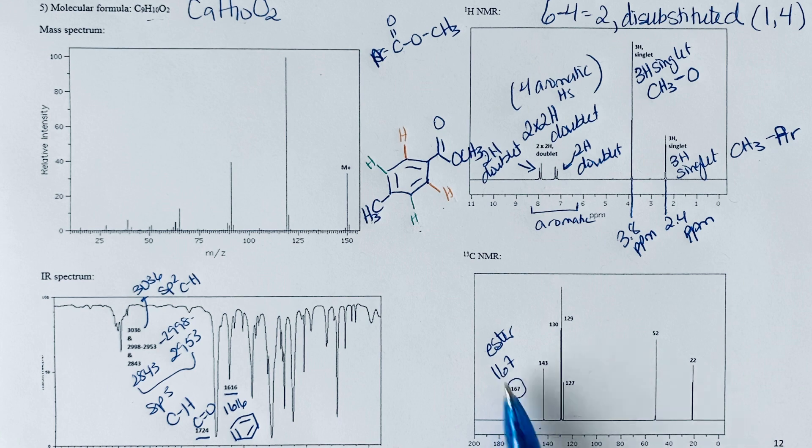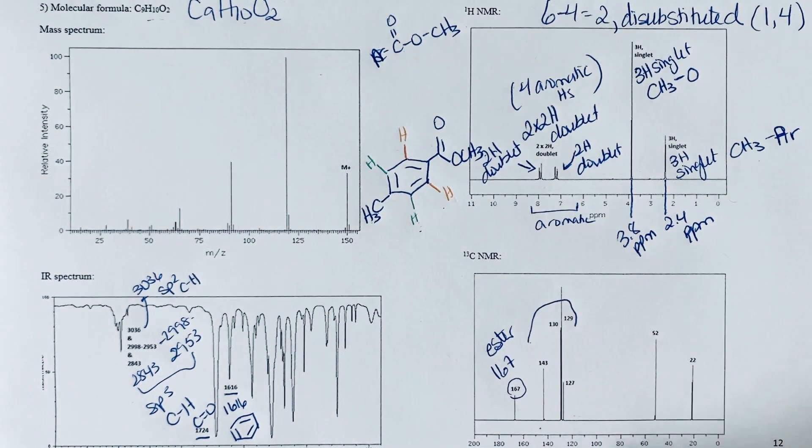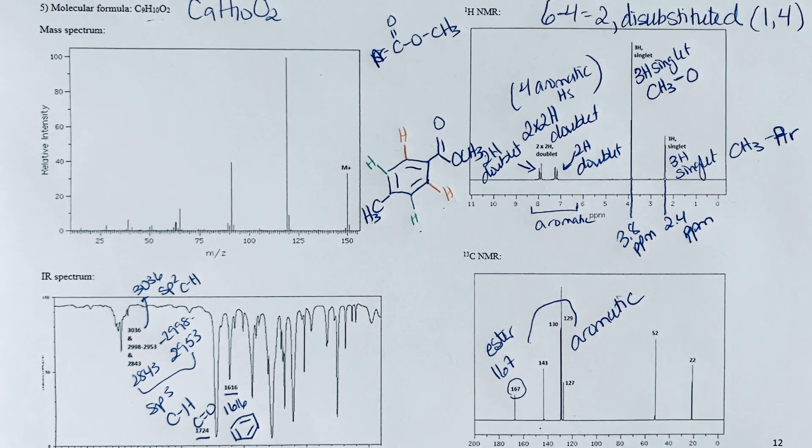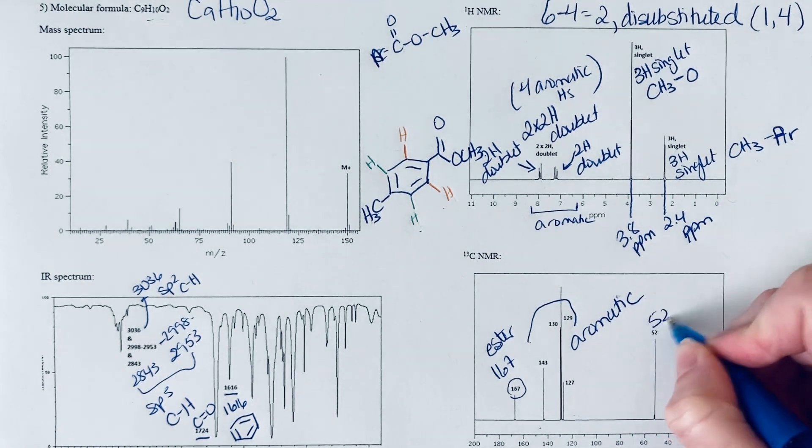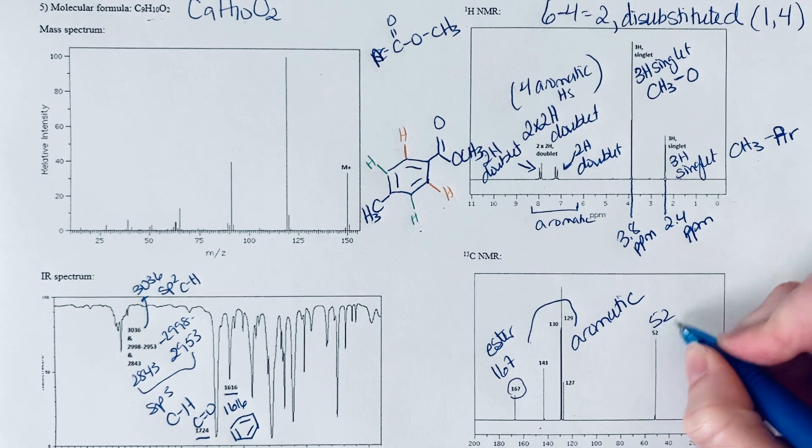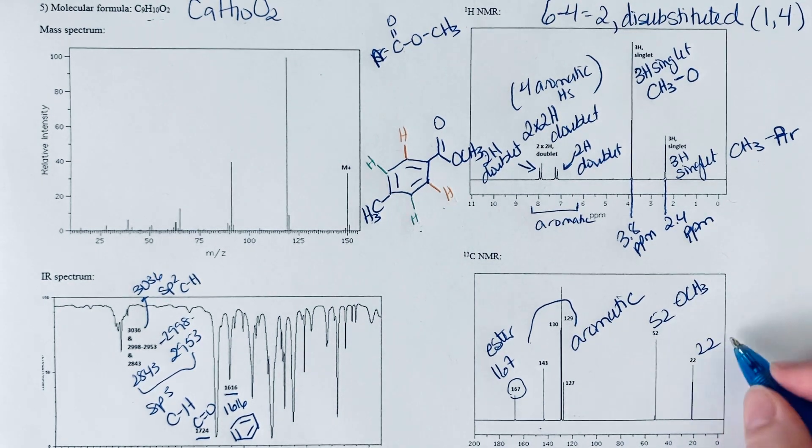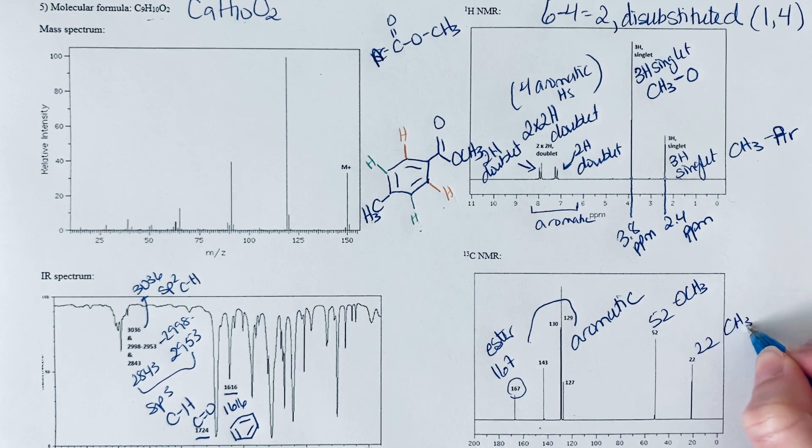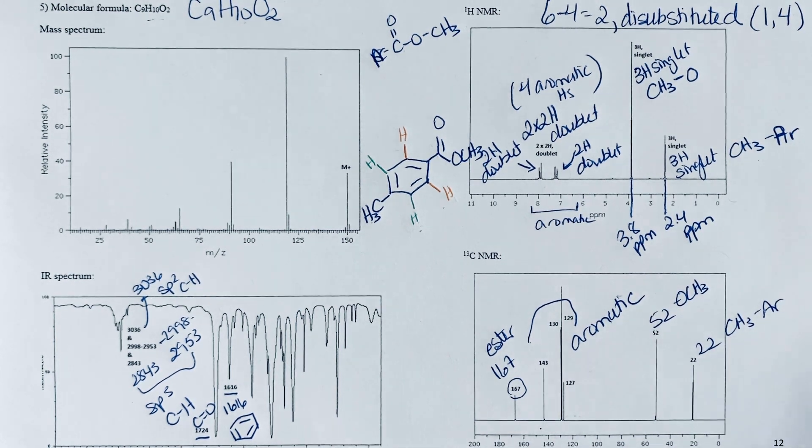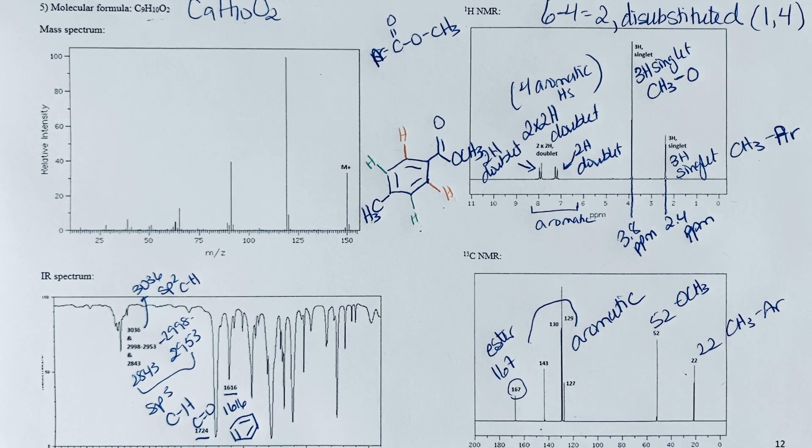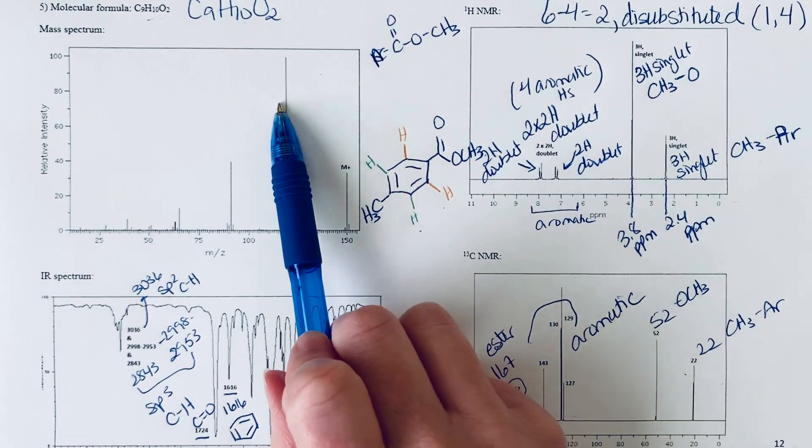Let's go to the carbon-13. We see the ester, we see some aromatic carbons, and then we see these two aliphatic carbons at 52 and 22. At 52, that higher chemical shift, that's the one that's attached to oxygen. At 22, this would be the one that's attached to the aromatic ring. That makes sense, so it's consistent with the carbon-13.